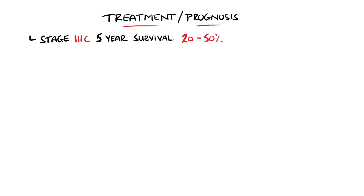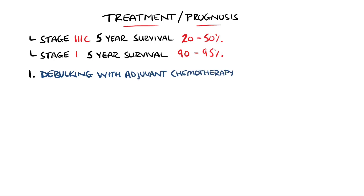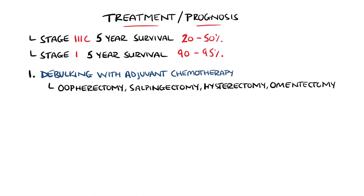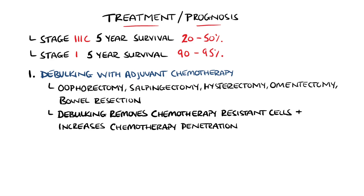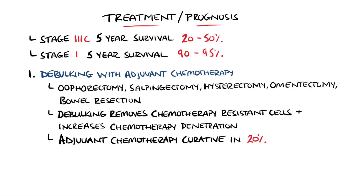The average 5-year survival is between 20% and 50% depending on the subtype, while in contrast, if it is found in stage 1, there is a 90–95% 5-year survival rate. Debulking surgery followed by adjuvant chemotherapy is the most typical approach, as ovarian cancer tends to metastasise to surfaces of organs rather than deep into the tissues. This can involve removing the ovaries, fallopian tubes, uterus, and omentum, as well as parts of other organs if there is distant spread, such as a bowel resection. Debulking may remove more chemotherapy-resistant cells, such as cells in different stages of the cell cycle, as well as allowing better penetration and therefore making chemotherapy more effective. It is curative in around 20% of advanced cases following debulking surgery.